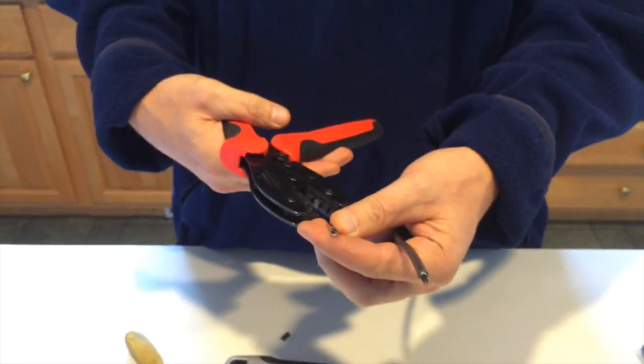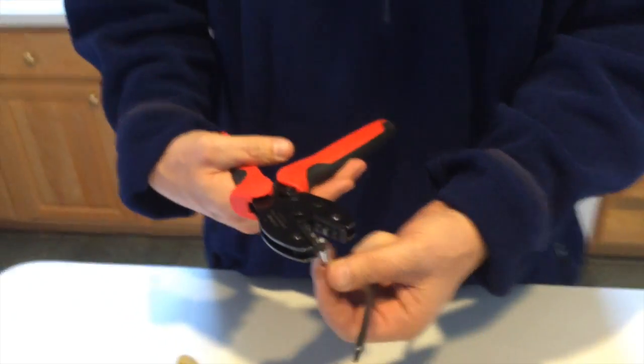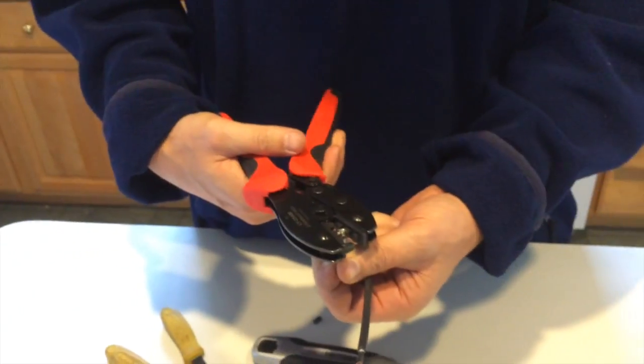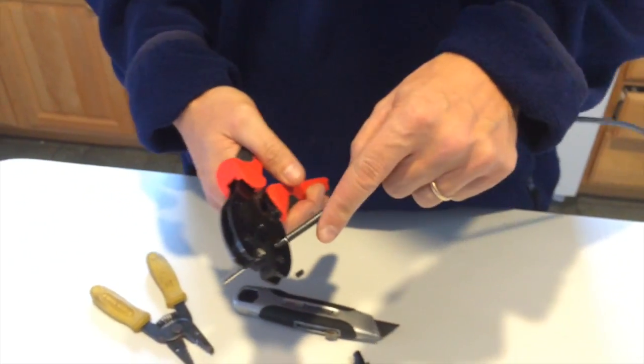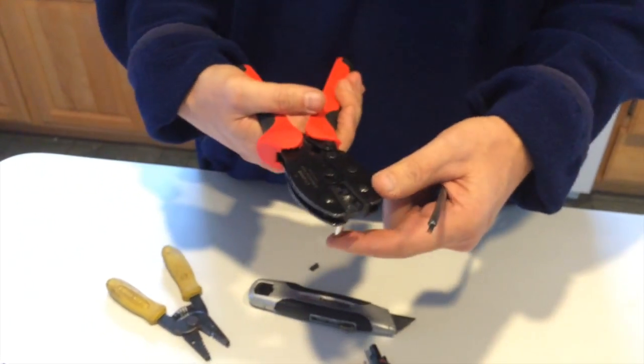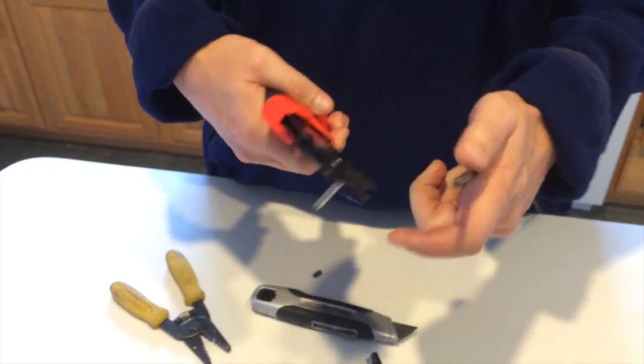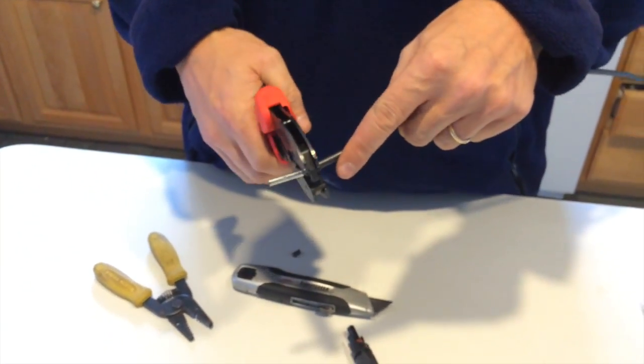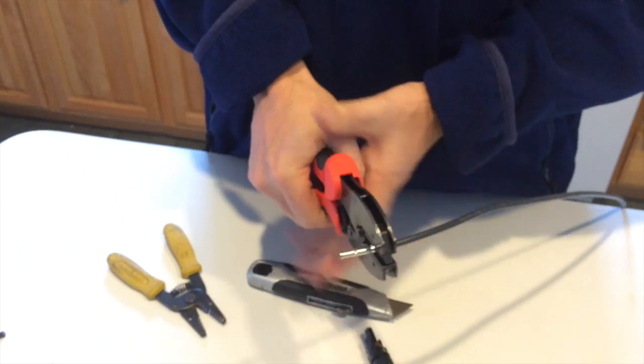First of all, we're going to do the female pin here. You load it into this section and sort of come down to hold it. Some of the nicer crimp mechanisms hold it for you in the back here. Stick the wire in and then go all the way down.